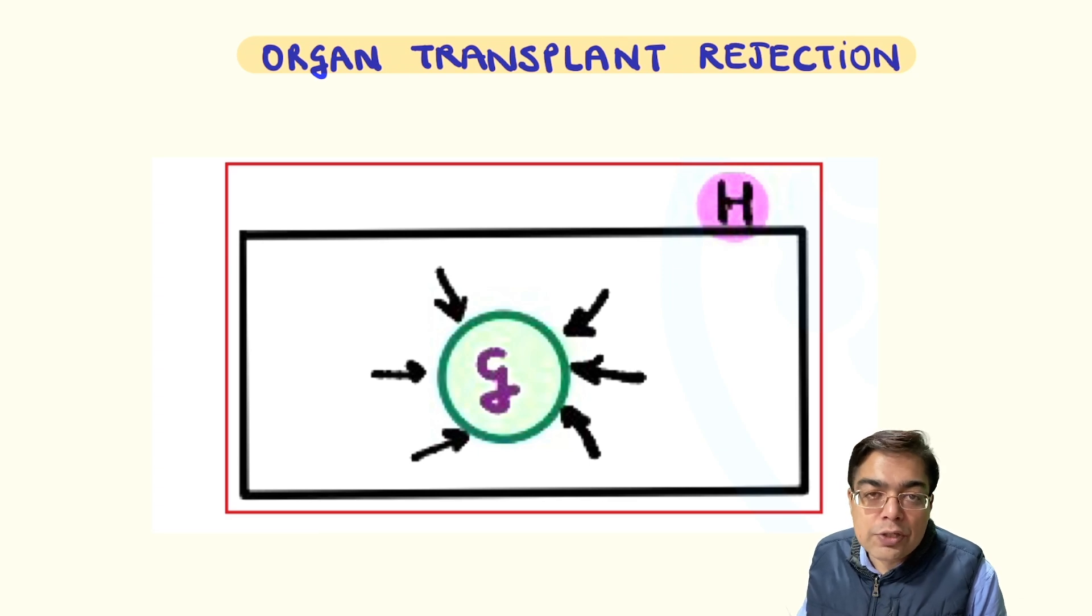If the transplant rejection takes place after many months or years, that is given the name of a chronic transplant rejection, which is again going to be either because of antibodies, but more importantly, because of a cell-mediated rejection.